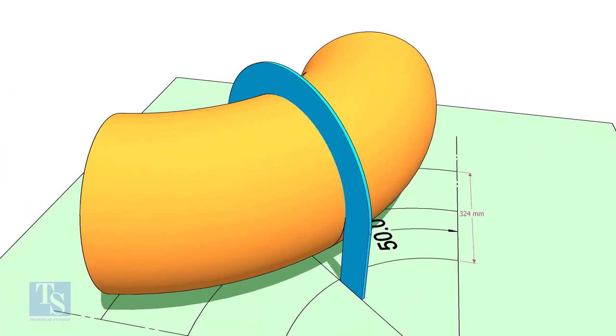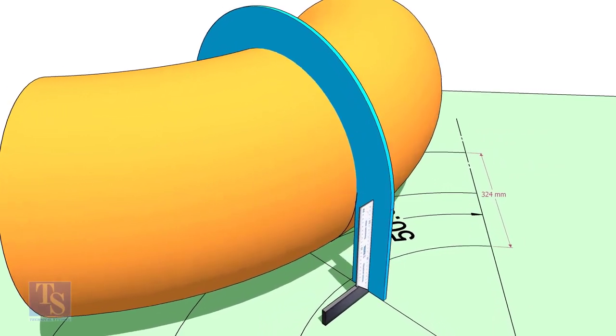Put the half circle plate on the elbow exactly on the line as shown. Make the plate right angle.